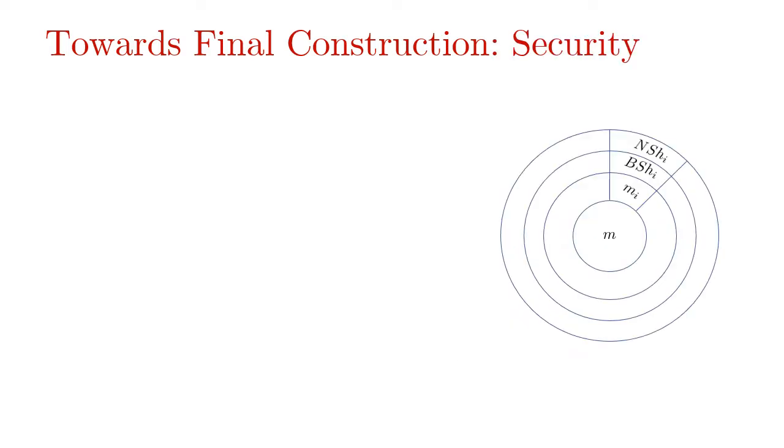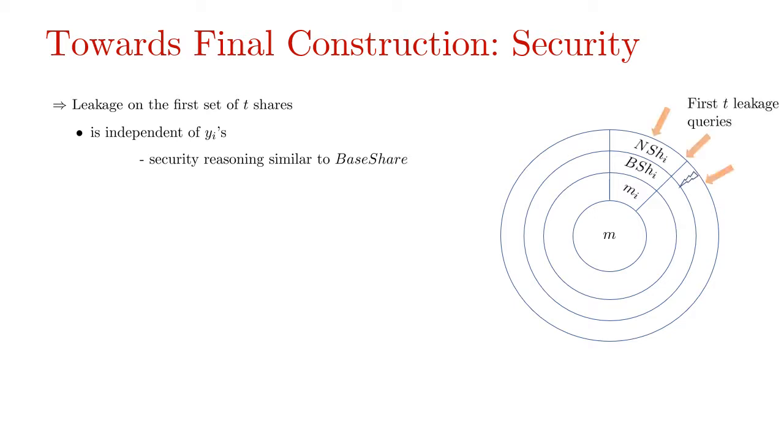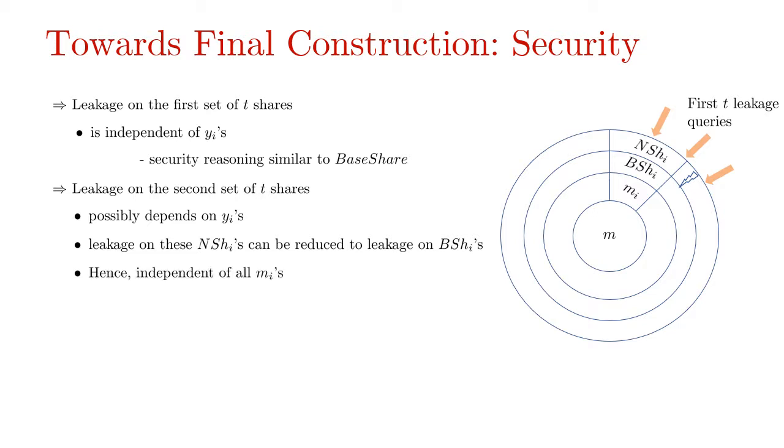To see why this extra layer of masking with fresh extractor outputs work, observe that the first set of T leakage responses are independent of all yis by the security of extractor on the seed s'. The reasoning is similar to the security of base share and hence won't be repeated. The second set of T leakage responses may possibly depend on yis but we show that this leakage on next share can be reduced as leakage on the base shares which we have already discussed to be independent of MIs while discussing the security of base shares.